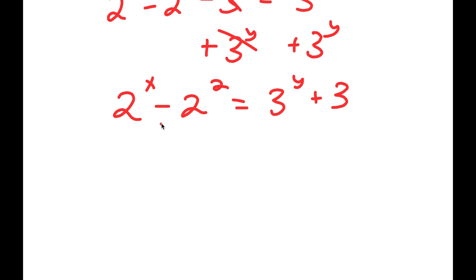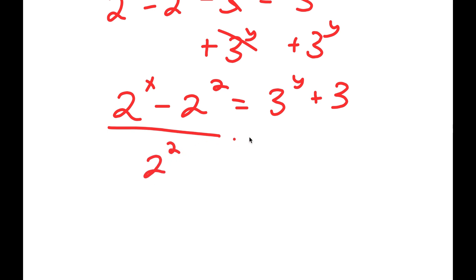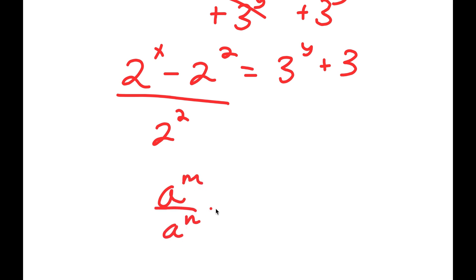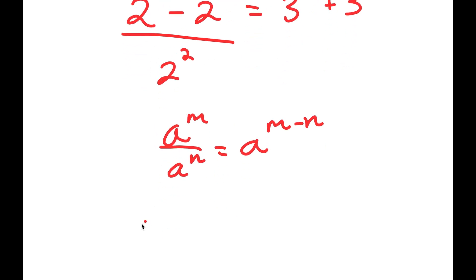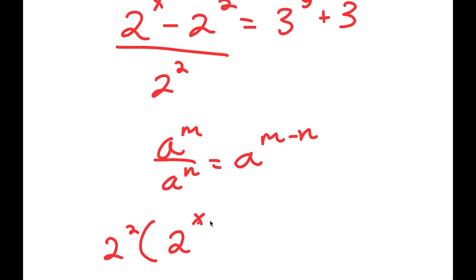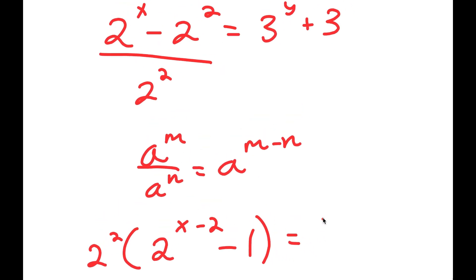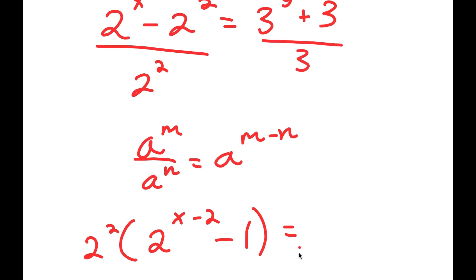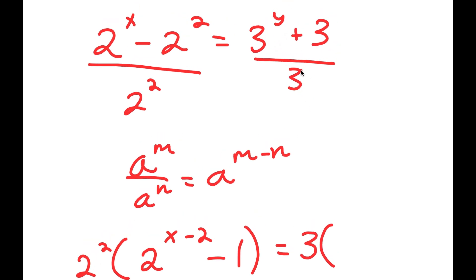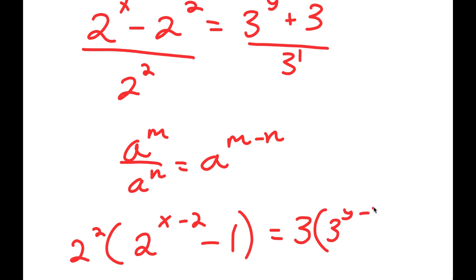From the left hand side, I'm going to divide by 2 squared. So 2 to the power of x divided by 2 squared — using the rule a to the power of m over a to the power of n equals a to the power of m minus n — gives 2 to the power of x minus 2. Then minus 2 squared divided by 2 squared is 1. On the right side, dividing by 3: 3 is 3 to the power of 1, so I get 3 to the power of y minus 1, and 3 divided by 3 gives plus 1.